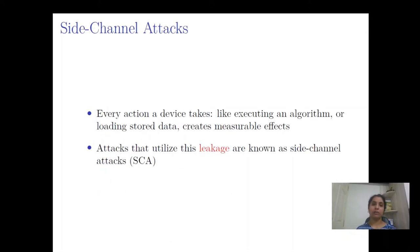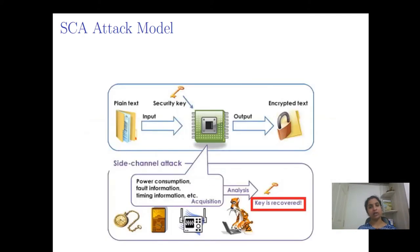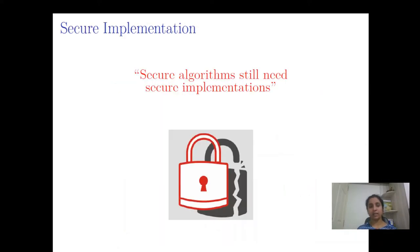The crypto algorithm must hide the secret to prevent the adversary from compromising the device. But while executing the algorithm on the device, the device may have measurable effects in the form of leakage. Considering the side channel attack model, along with the input and output to the device, the adversary can also obtain leakage in the form of power consumption, timing information, or electromagnetic emanation, and use this to mount a side channel attack to recover the secret. The takeaway is: secure algorithms still need secure implementations.